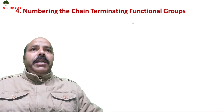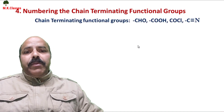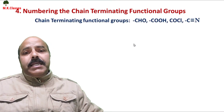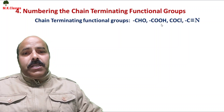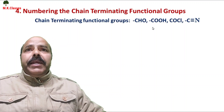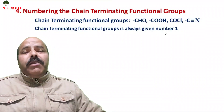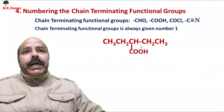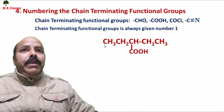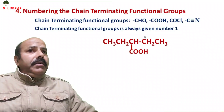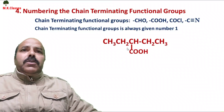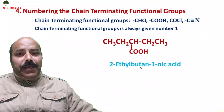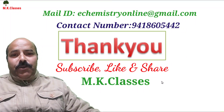Next rule is numbering the chain-terminating functional groups. Chain-terminating functional groups are always present at the terminal position of the carbon chain, and they always receive the number 1. For example, with 1 2 3 4 carbon atoms in the parent chain and an ethyl group substituted at position 2, and the chain-terminating carboxylic acid group at position 1, the name is 2-ethylbutan-1-oic acid. Hope students this is clear. Thank you, hope you have enjoyed today's lecture. Have a nice day.